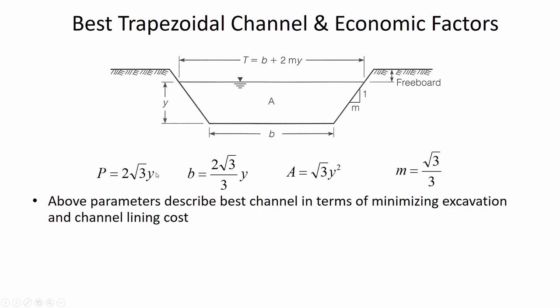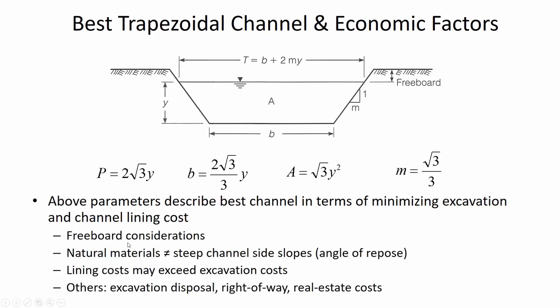Here are the geometric parameters for the best trapezoidal channel: wetted perimeter, bottom width, cross-sectional area, and side slope. Natural materials don't allow a side slope this steep. Because of the cost of concrete lining, it's often cheaper to use a normal earth lining and make the channel a bit wider — such as a one-to-two slope — even though you're excavating more area. Unless water is precious and preventing infiltration justifies the lining cost.